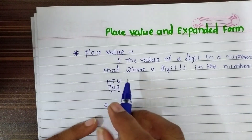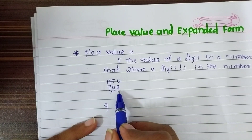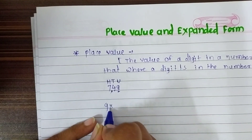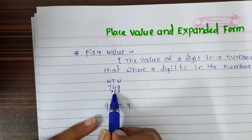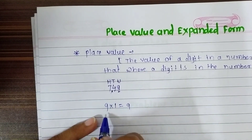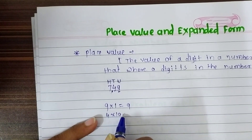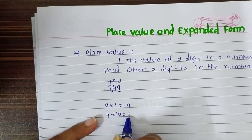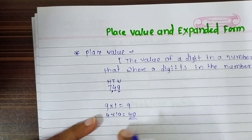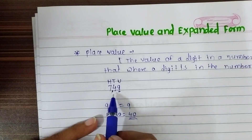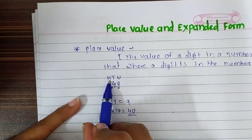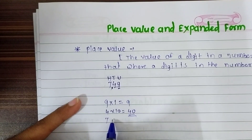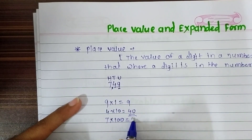To find out the value of 9, we have to multiply 9 by 1 — unit means 1. So 9 multiplied by 1 is 9. 4 is in the 10th place, so we have to multiply 4 by 10, which equals 40. The place value of 4 is 40. Now look at digit 7 — it is in the place of 100, so we multiply 7 by 100. The place value of 7 is 700.